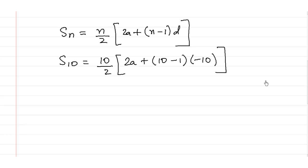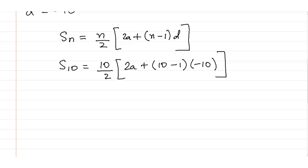S10 is 4,500. So 4,500 is equal to 5 bracket open 2A plus 9 multiplied by minus 10.